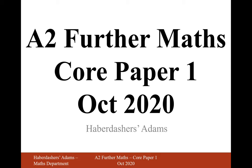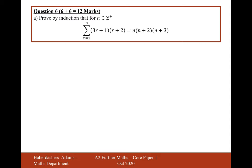Hello there and welcome to the October 2020 paper 1. Here we're looking at question 6, two six-markers of proof by induction. Proof by induction that for n existing in the positive integers, the expression on the left is equal to the expression on the right. This one doesn't look too bad.